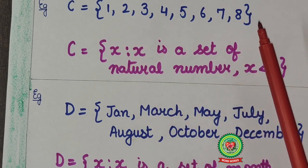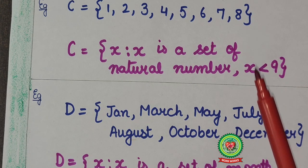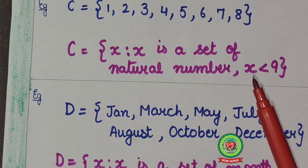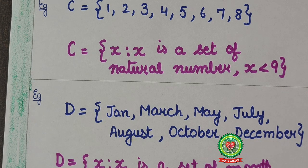That they all are natural numbers. Right? But there is a certain condition that is they are less than nine. So I will write here x less than nine. Here we can also write x is less than equals to eight. Now let's understand with one more example.